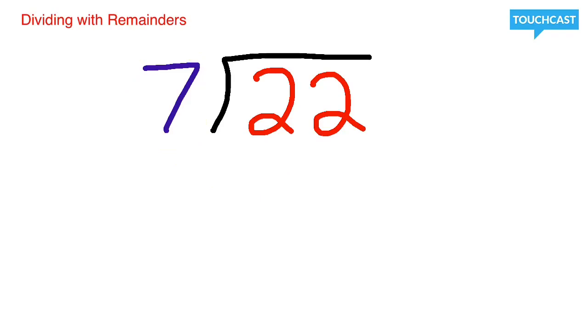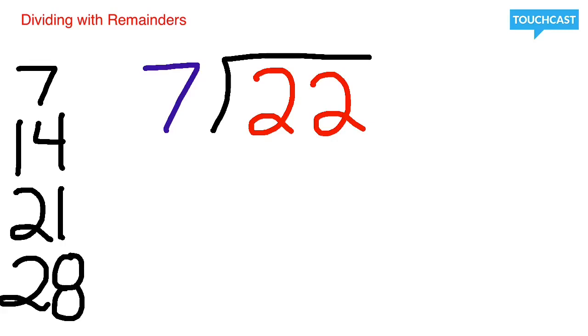As we go through and start to solve, we know 7 times 1 is 7, 7 times 2 is 14, 7 times 3 is 21, and 7 times 4 is 28. Right there we know this one's not going to count because it's too big, so we'll take it away.